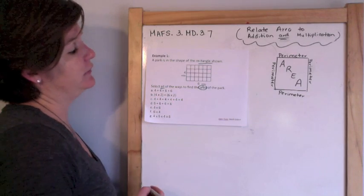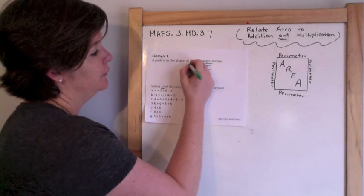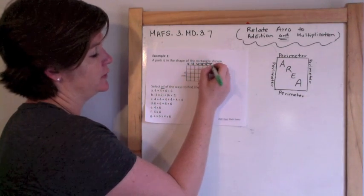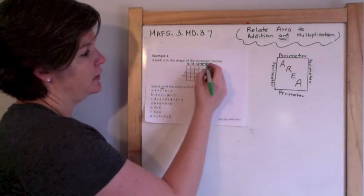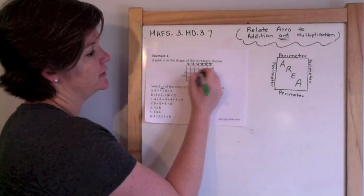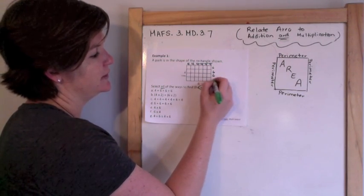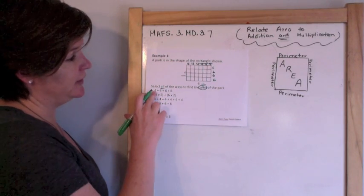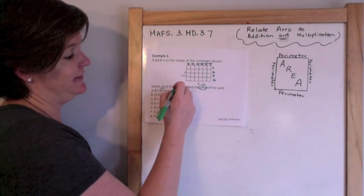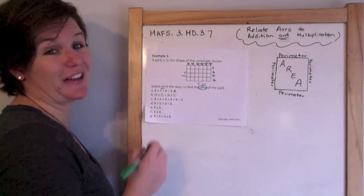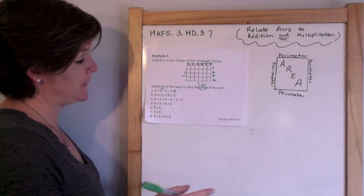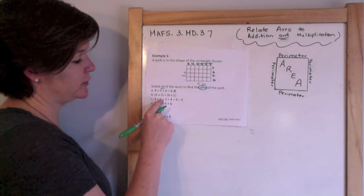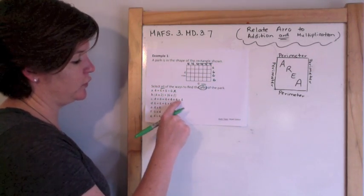So what could I do to add? I could add four plus four plus four plus four plus four plus four, because I've got four going down. Or I could do six plus six plus six plus six. I see one option that has four plus four plus six plus six — but that would be finding the perimeter, and that's not what I want.